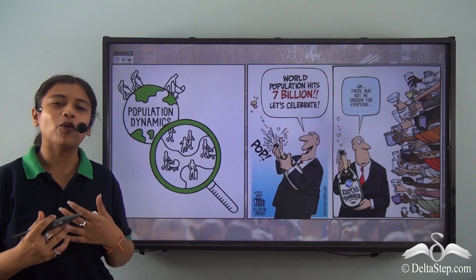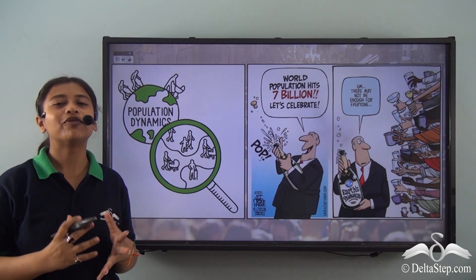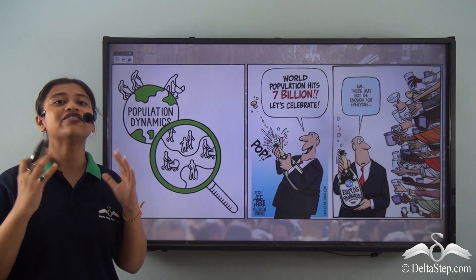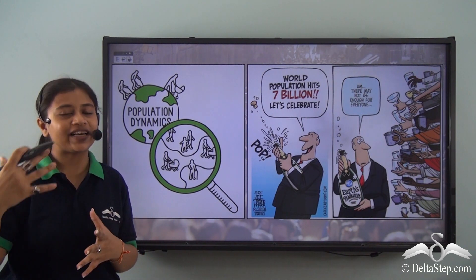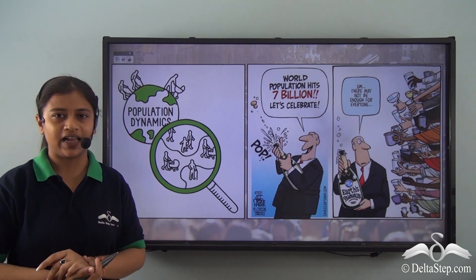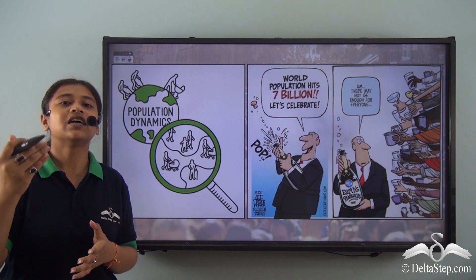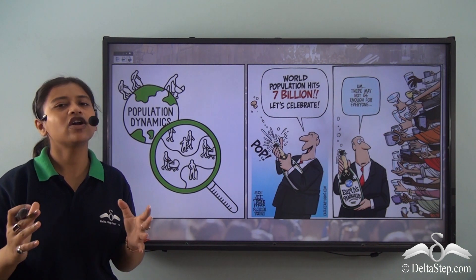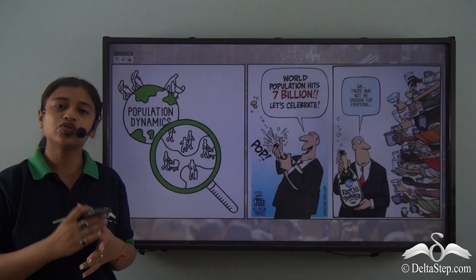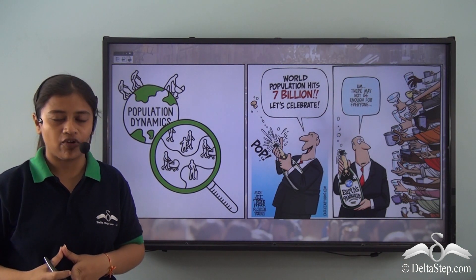In our previous lesson on population dynamics, we were able to understand what a population change is. A population change helps us understand the different factors that lead to a change in population of a particular geographical area at a specified period of time. But for a government, knowing only the change in population will not be enough. The government needs to act on those changes and for doing so, it needs to have a clear idea about the population it is working for.